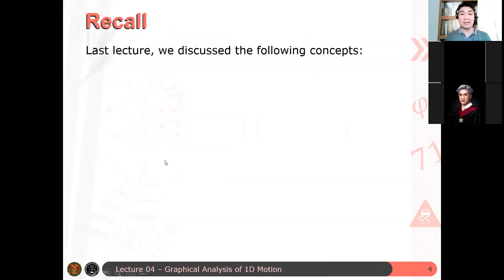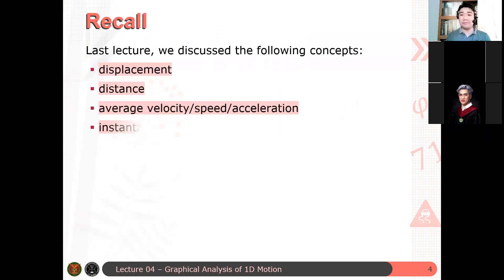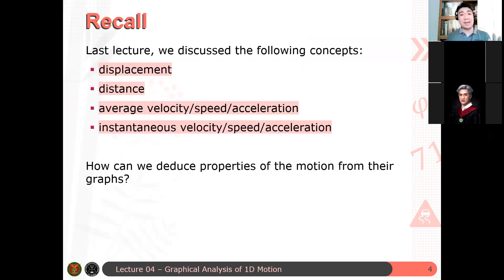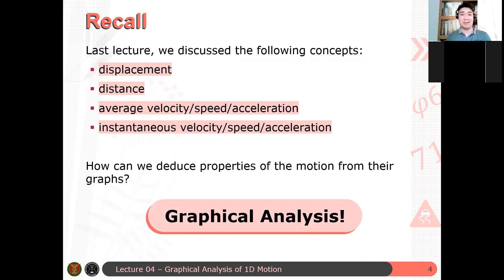So recall. Last lecture we discussed the following concepts, the following definitions. These are all kinematical variables that you'll be needing for the rest of the semester: displacement, distance, your average speed, velocity, and acceleration, and your instantaneous speed, velocity, and acceleration. Now the question is, again, given a graph of the position time graph, or the velocity time graph, or let's say acceleration time graph, can you deduce or can you determine some properties of the motion of the object? And of course, the answer there is yes.